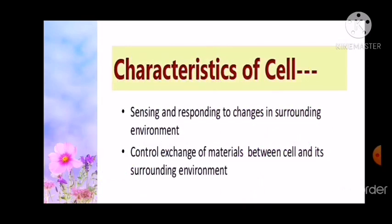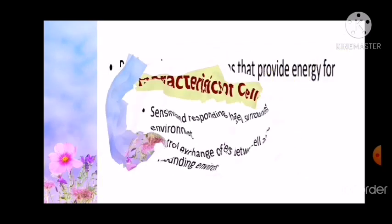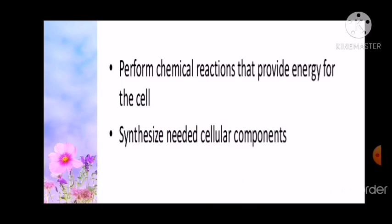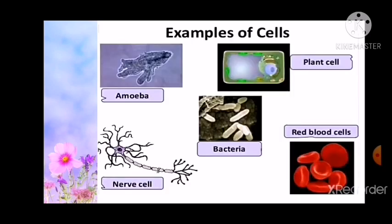Characteristics of cell: sensing and responding to changes in the surrounding environment; controlling exchange of materials between the cell and its surrounding environment; performing chemical reactions that provide energy for the cell; and synthesizing needed cellular components. In this slide, you can see examples of some cells such as amoeba, plant cell, bacteria, nerve cell, and red blood cells.